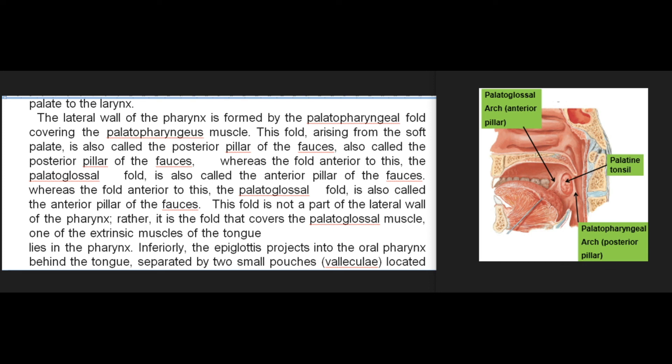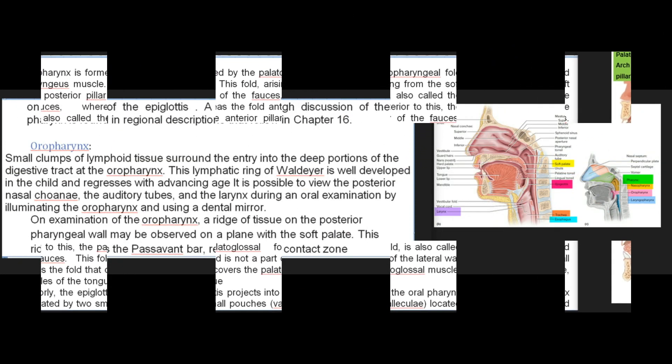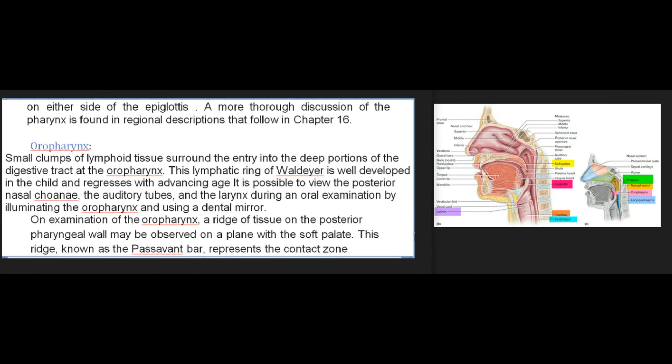The lateral wall of the pharynx is formed by the palatopharyngeal fold covering the palatopharyngeus muscle; this fold arising from the soft palate is also called the posterior pillar of the fauces. The fold anterior to this, the palatoglossal fold, is also called the anterior pillar of the fauces; this fold covers the palatoglossus muscle, one of the extrinsic muscles of the tongue. Inferiorly, the epiglottis projects into the oropharynx behind the tongue, separated by two small pouches (valleculae) located on either side of the epiglottis. A more thorough discussion of the pharynx is found in regional descriptions in chapter 16.